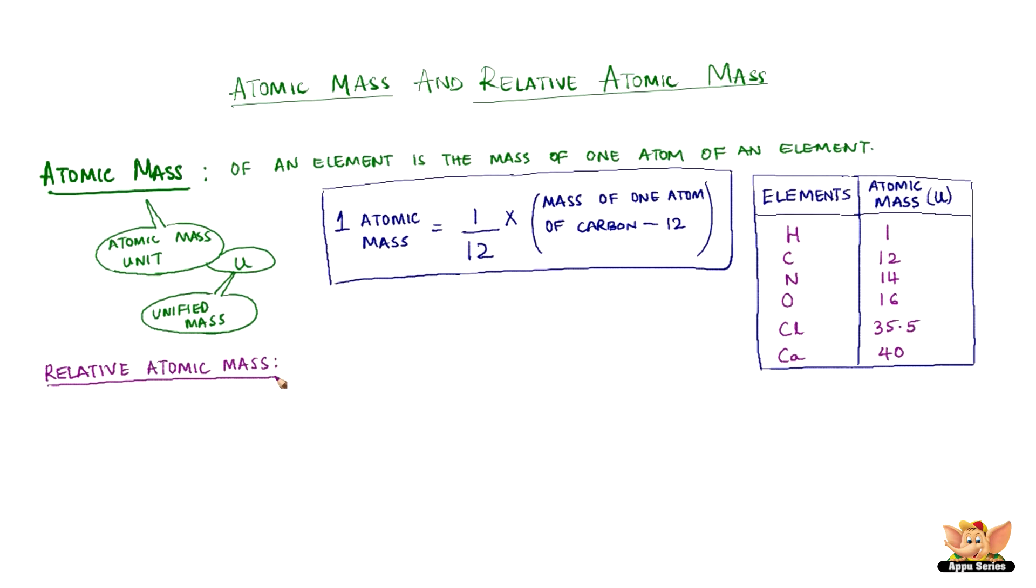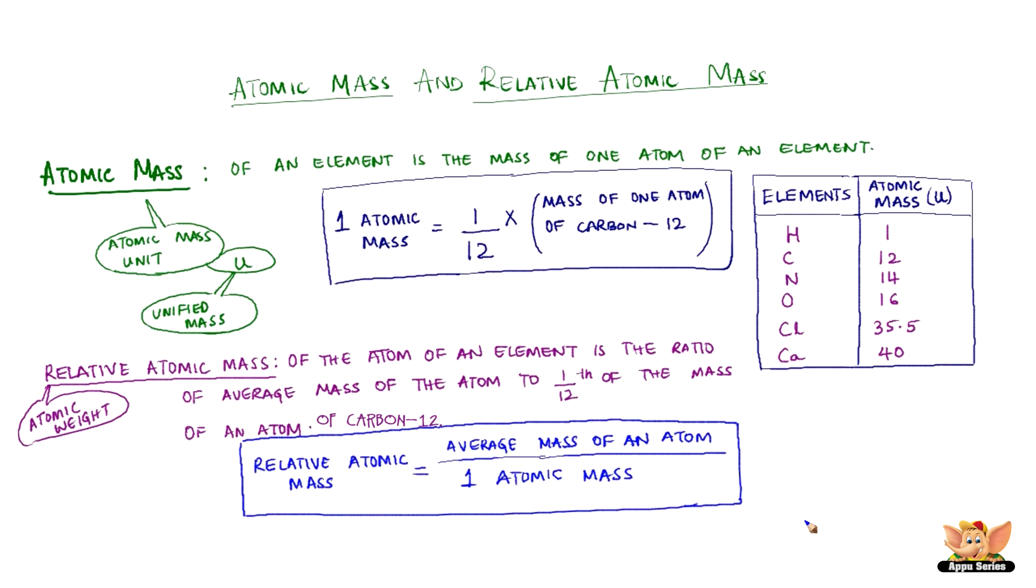Relative atomic mass, also known as the atomic weight. Relative atomic mass of an atom of an element is the ratio of average mass of the atom to one-twelfth of the mass of an atom of carbon-12. Carbon-12 atom is taken as a reference for measuring relative atomic masses of all elements.